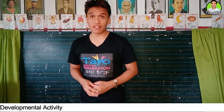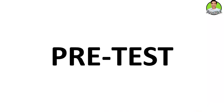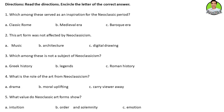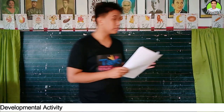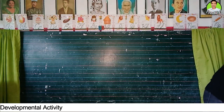Now let us have a short activity. Let's identify if you know something about the different art forms from the neoclassic period. I have here an activity sheet. Read the directions carefully and encircle the letter of the correct answer. I will only give you five minutes to finish this activity. Get one and pass. You can now start answering.